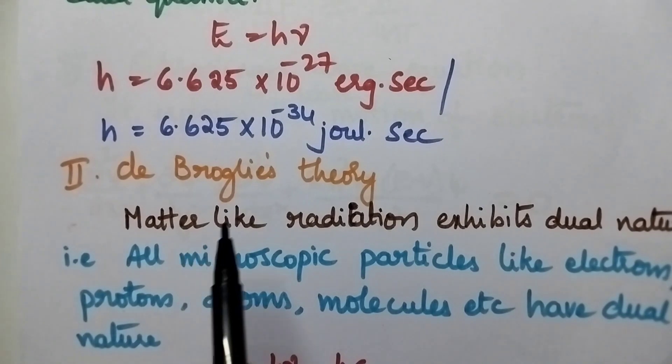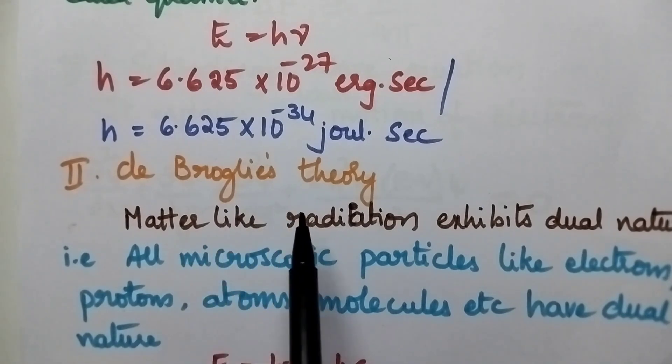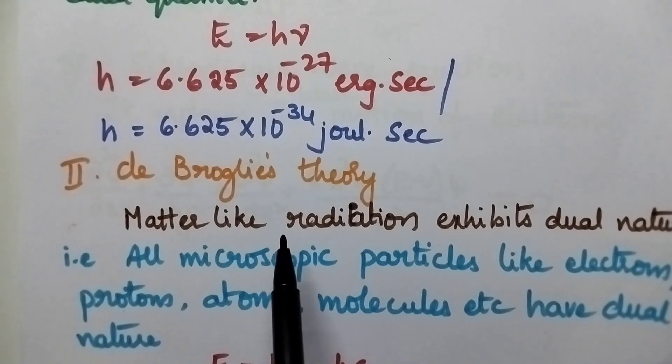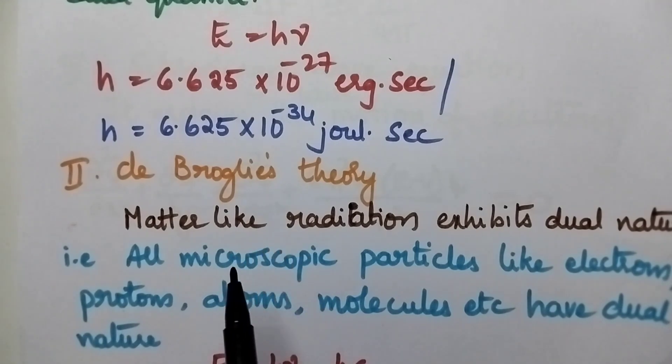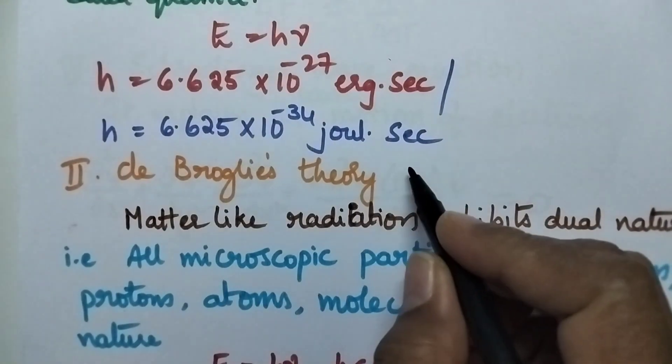Coming to the second theory, de Broglie's theory, it states that like radiation, matter also exhibits dual nature. Dual nature means wave nature and particle nature.